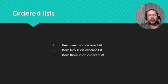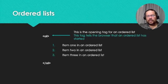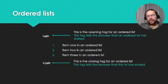Now, how do we start this? We have to first start with the opening tag, and that tells the browser this is the start of a list and this list is an ordered list. Then we need to close it off at the end, and that just tells the browser we're done — this is the end of our list.